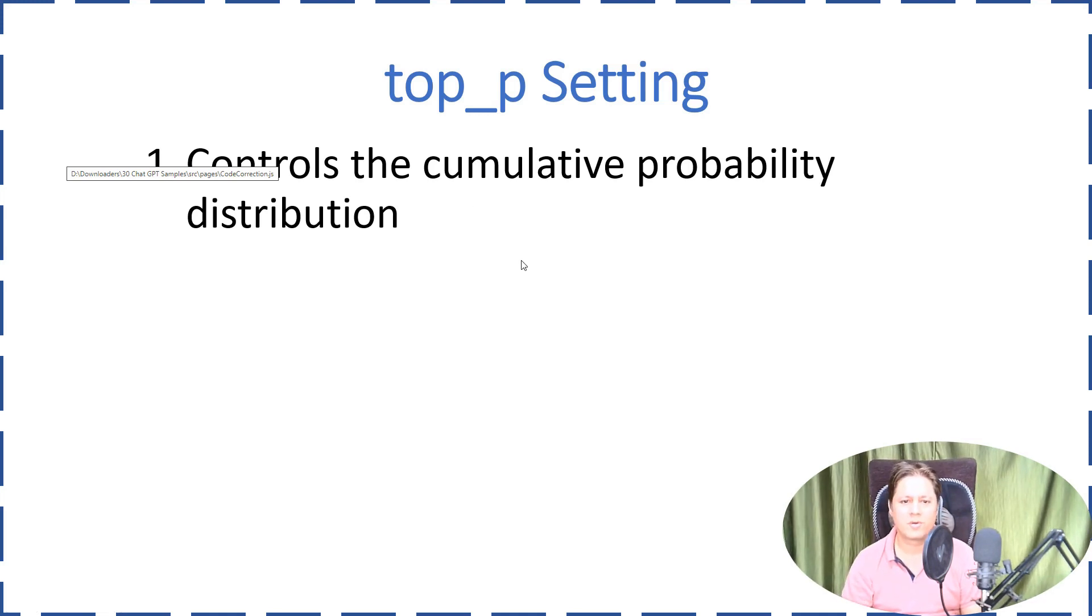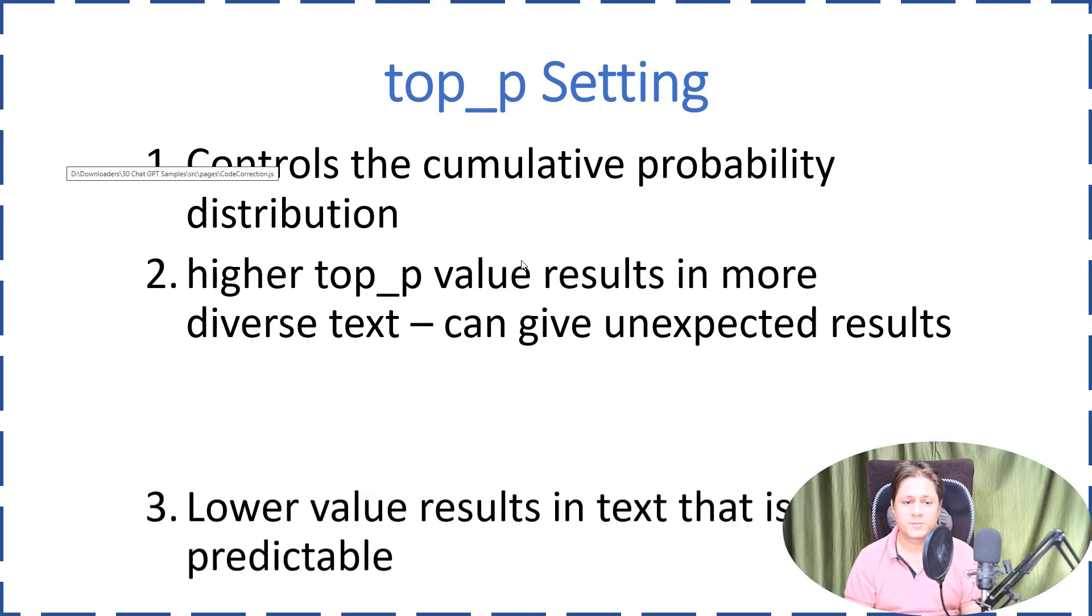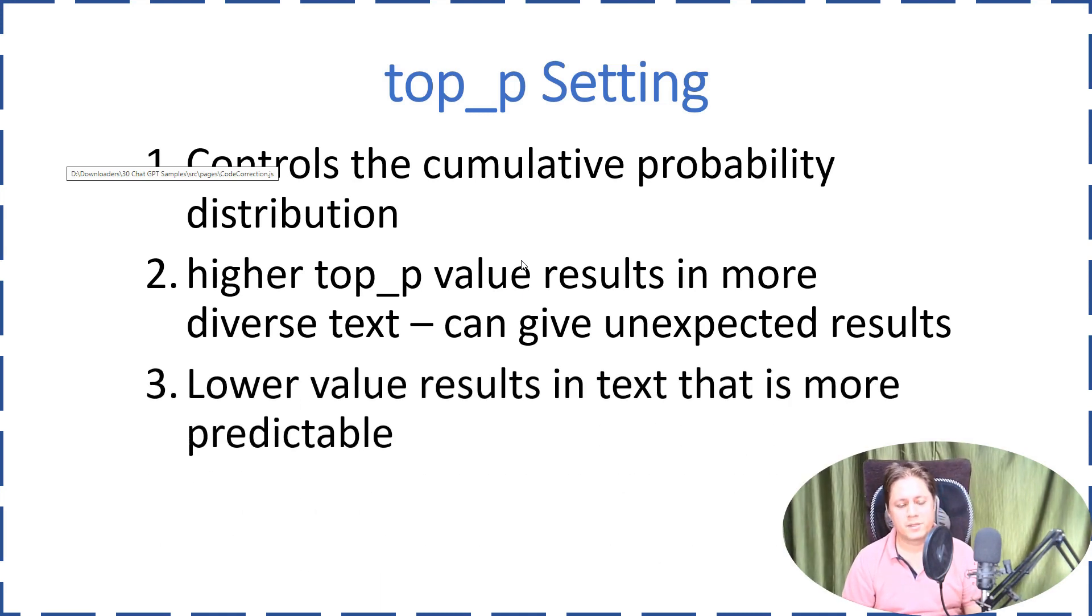It also controls the cumulative probability distribution. So same thing, if top_p value is more, you can expect more diverse text actually and it can give unexpected results. Similarly, same as the temperature setting.